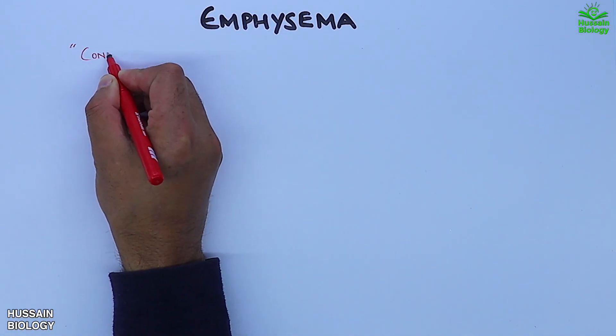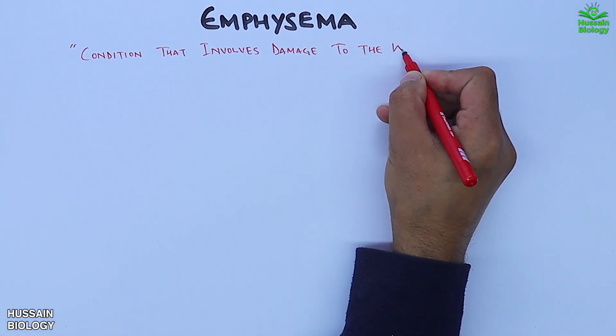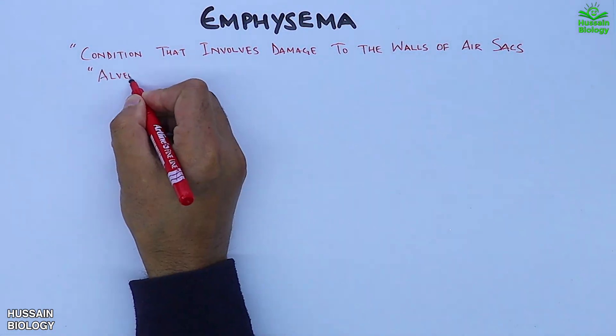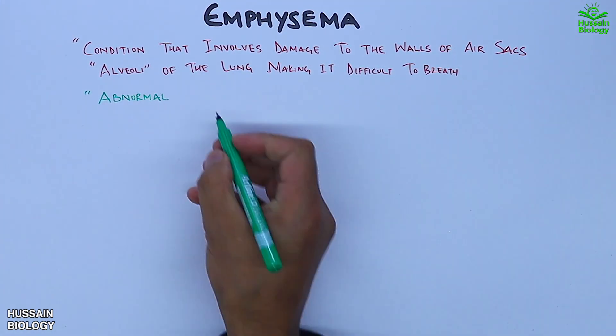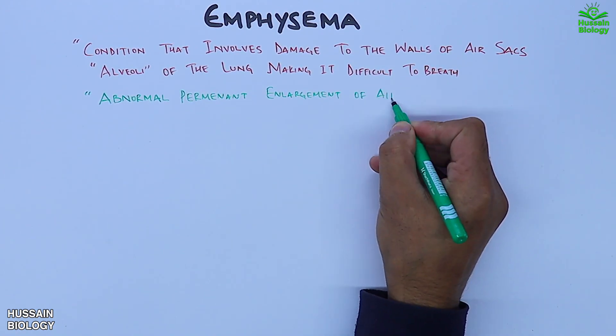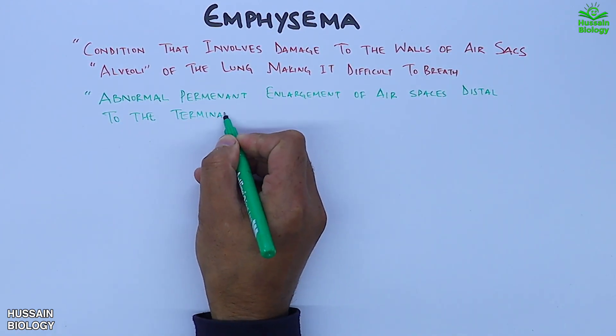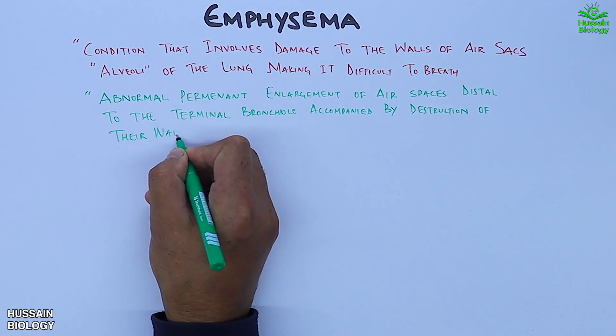Amphysema is a condition that involves damage to the walls of air sacs, the alveoli of the lung, making it difficult to breathe. In broader terms, it is the abnormal enlargement of air sacs distal to the terminal bronchiole, accompanied by destruction of the walls.